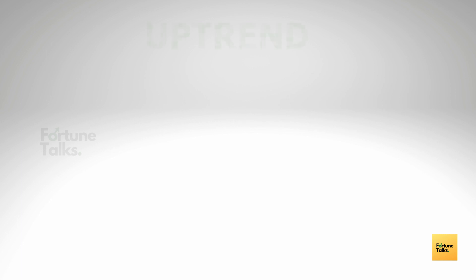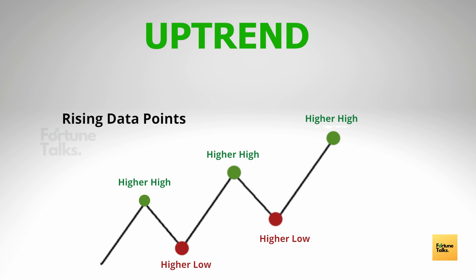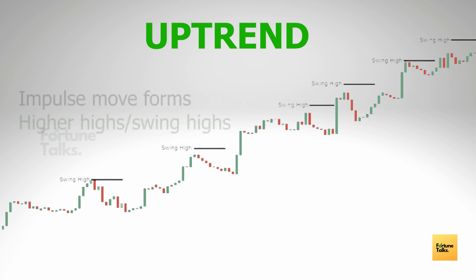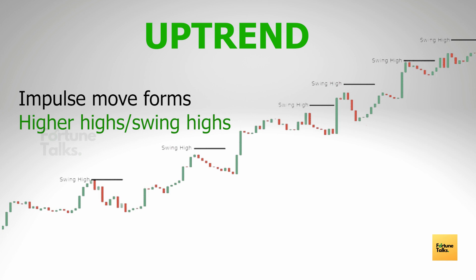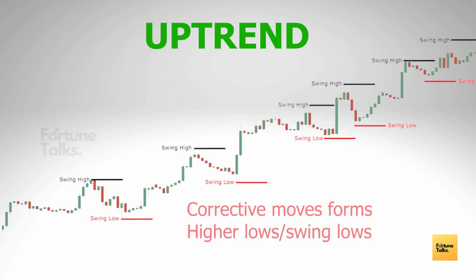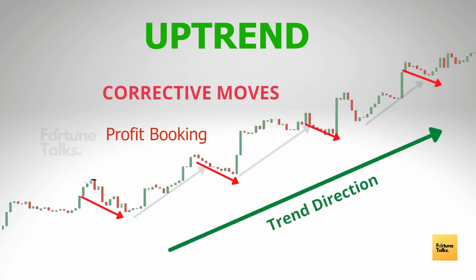By definition, uptrends are marked by rising data points such as higher swing highs and higher swing lows. The price moves up in a recognizable pattern. During an uptrend, the impulse move is a strong upward move with a series of strong bullish candles forming a higher price than the previously formed high. This is followed by a corrective move in the opposite direction of the prevailing bullish trend, usually consisting of fewer, weaker candlesticks that form a lower price — but still higher than the previous low.